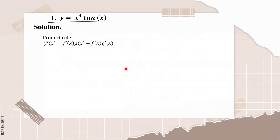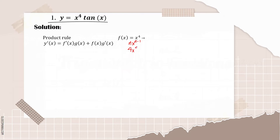First, we need to find the derivative of f of x, which is x raised to the fourth. To find this, we need to use the power rule, which is n times x raised to n minus one. Our n here is four. Therefore, it would be four times x raised to four minus one, which is equal to three.